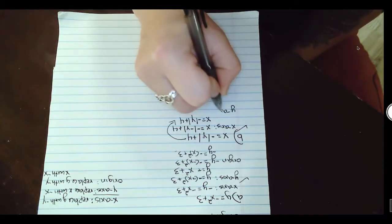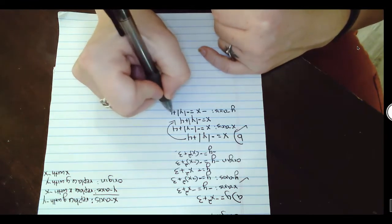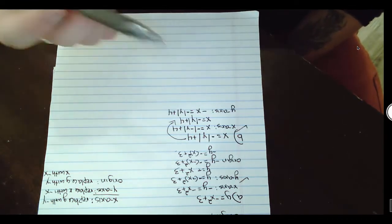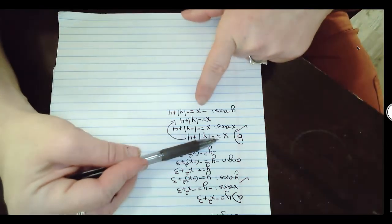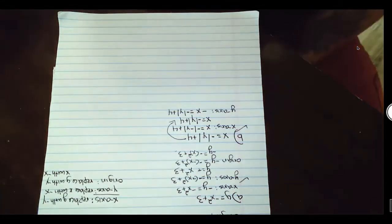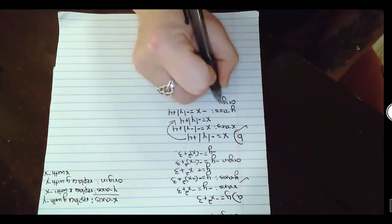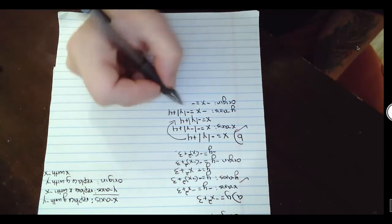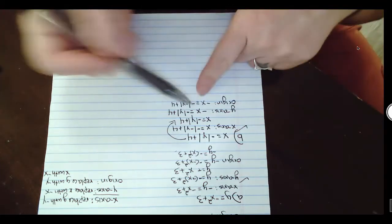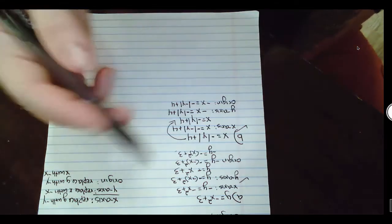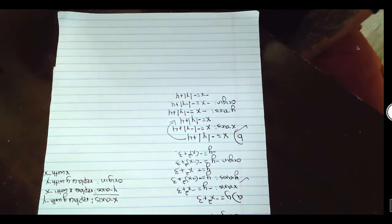Let's check y-axis symmetry by plugging in negative x for x. When we do this, there's nothing that simplifies the negative x, so negative x is obviously not the same as the original x. Y-axis symmetry does not work. Because y-axis symmetry doesn't work, origin is not going to work either. For origin, we'd plug in negative x for x and negative y for y. Even though the y will simplify to a positive y inside the absolute value, the negative x won't disappear, and that throws the entire thing off.